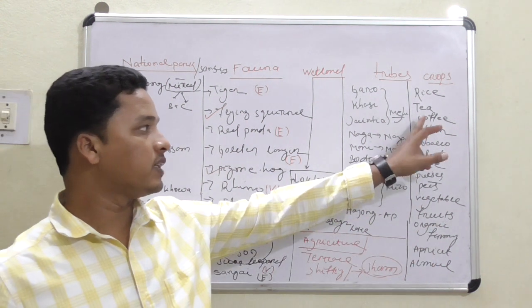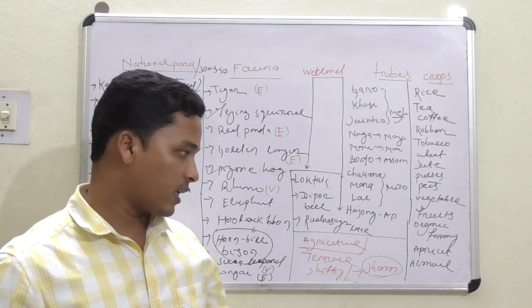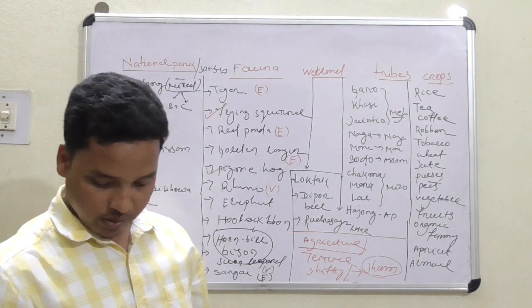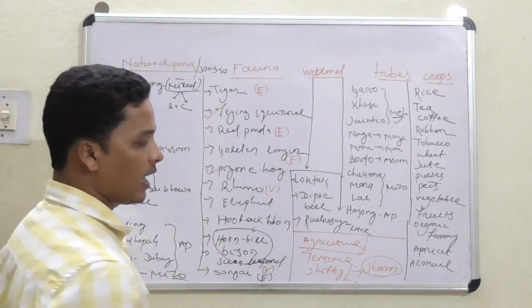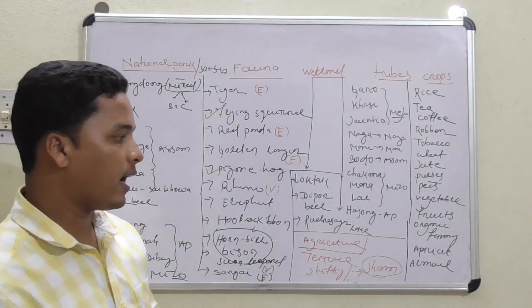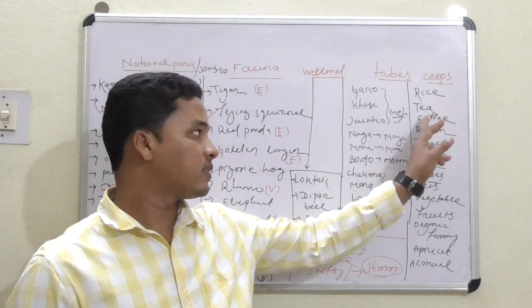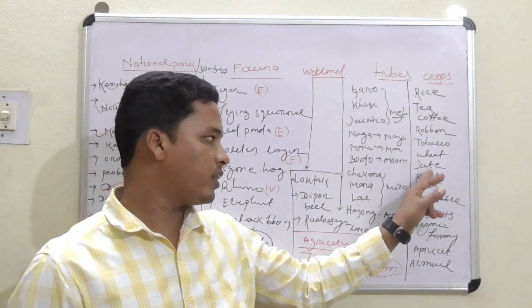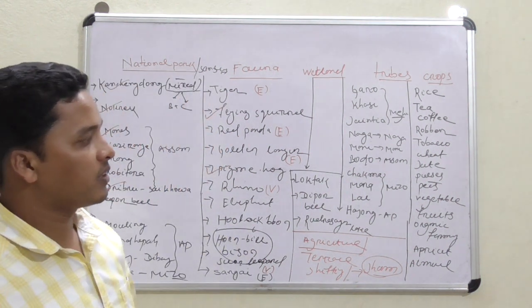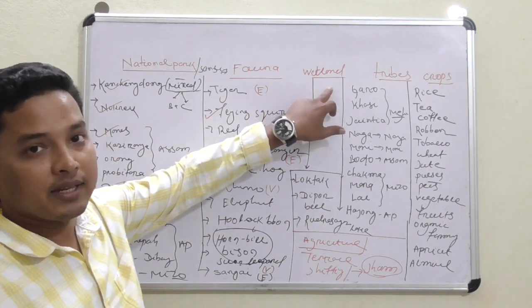The crops cultivated include tea, coffee, rubber, tobacco, wheat, jute, pulses, peas, vegetables, fruits, organic farming, and horticulture including apricot and almonds. Sikkim is the first organic state of India.